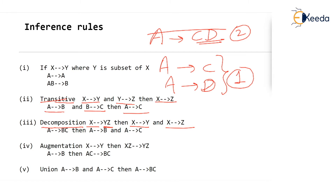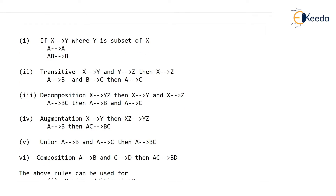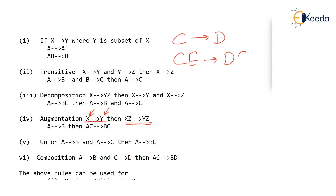The fourth rule is augmentation. The augmentation rule says that if X determines Y, then you can add anything to the left-hand side, but the same thing must be added to the right-hand side, and still the FD holds. So if X determines Y, then XZ determines YZ. As an example, suppose C determines D — then CE determines DE. Here is another example: A determines B, then surely AC determines BC. We have added C on both sides. This is augmentation.